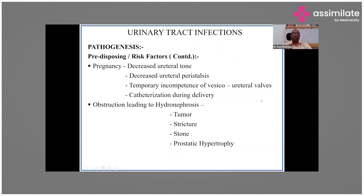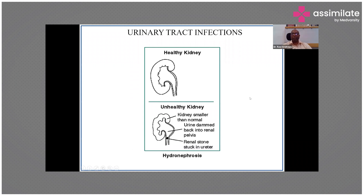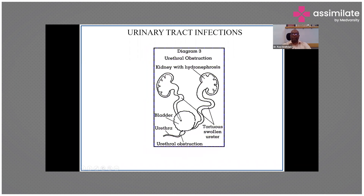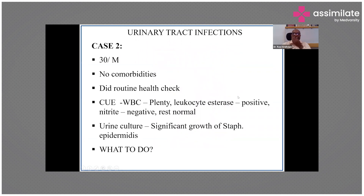During delivery, catheterization is often required, which can introduce infection. Obstruction can also lead to hydronephrosis, causing urinary stasis and infection. Obstruction can be due to a tumor, a stone, a stricture, or prostate enlargement. There are so many predisposing factors, which is why further evaluation is needed when someone presents with a UTI to prevent recurrence. A healthy kidney is shown alongside one with a stone causing hydronephrosis, and another case where an enlarged prostate has blocked the urethra, causing bilateral hydronephrosis.